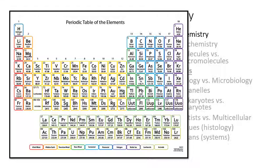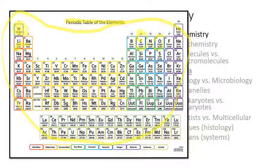You might have seen this at some time — this is called the periodic table of the elements. Every substance in the world can be broken down to a combination of these elements. The element symbol for carbon is C, for oxygen is O, for sodium is Na, and for chlorine is Cl. If you react sodium and chlorine together, you get a familiar substance called sodium chloride — also known as table salt.